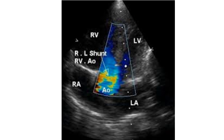The VSD in Tetralogy of Fallot is a malalignment VSD which results from the malalignment of the ventricular septum with respect to the aorticopulmonary septum during embryonic development. The shift of the aorticopulmonary septum towards the pulmonary side produces both the ventricular septal defect and the narrowing of the right ventricular outflow tract.